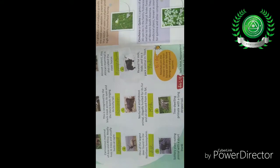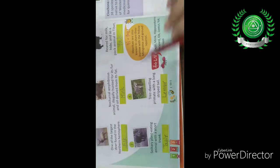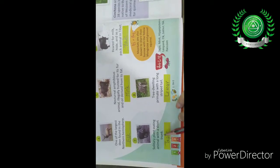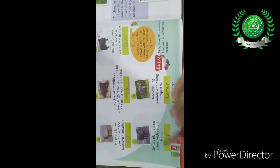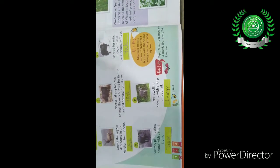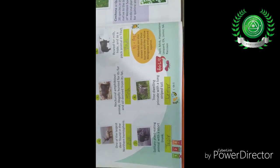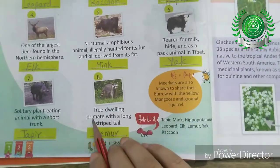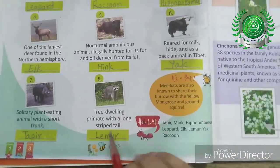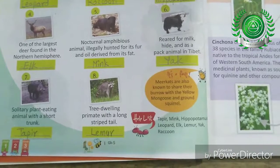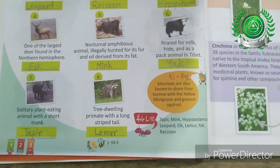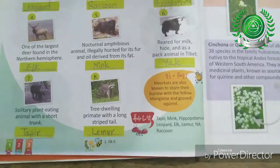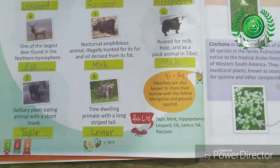The next is a solitary plant-eating animal with a short trunk. This is a plant-eating animal which has a small trunk, and its name is Tapir. The last is a tree-dwelling primate with a long striped tail, and its name is Lemur.